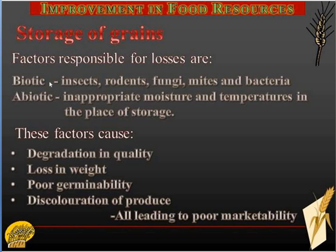Biotic factors concern all living organisms that are going to affect the crops. They may be insects or rodents — rodents include rabbits, rats, squirrels, and moles, which are very dangerous as they feed on grains. Then we have fungi, mites, and bacteria. Bacterial infection can happen anywhere. Among the abiotic factors, which come from nature, we have moisture content in the environment and temperature at the place of storage, as well as the temperature and moisture content of the grains themselves.